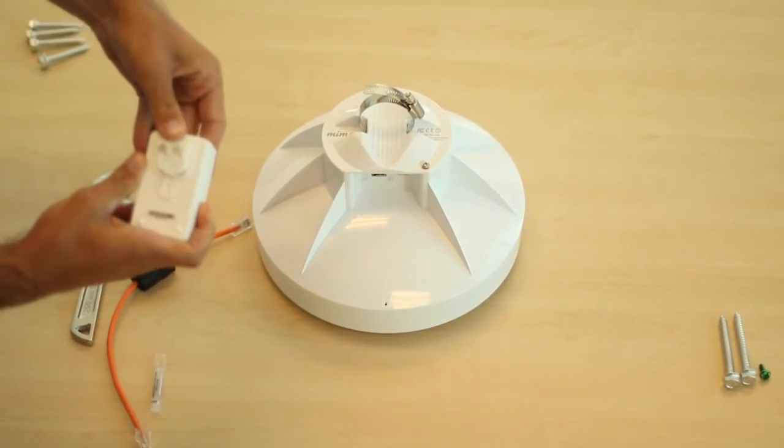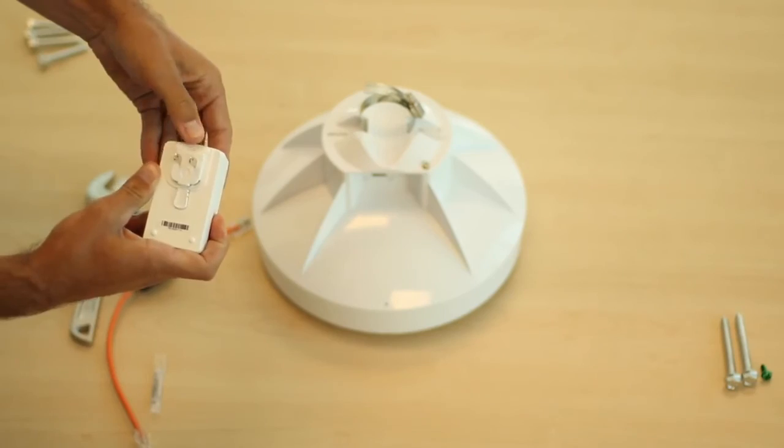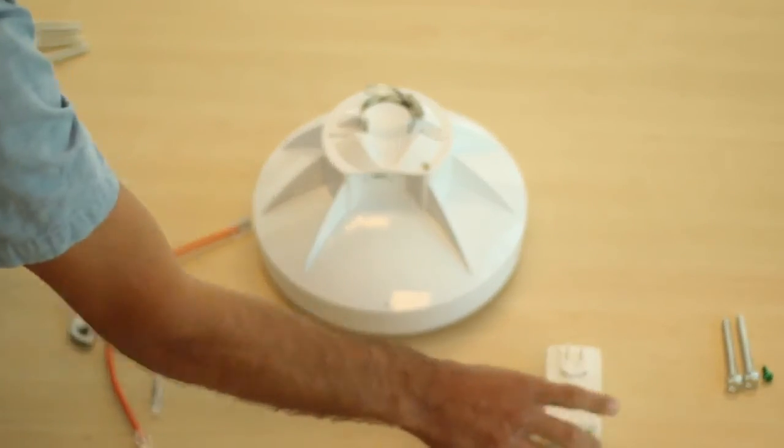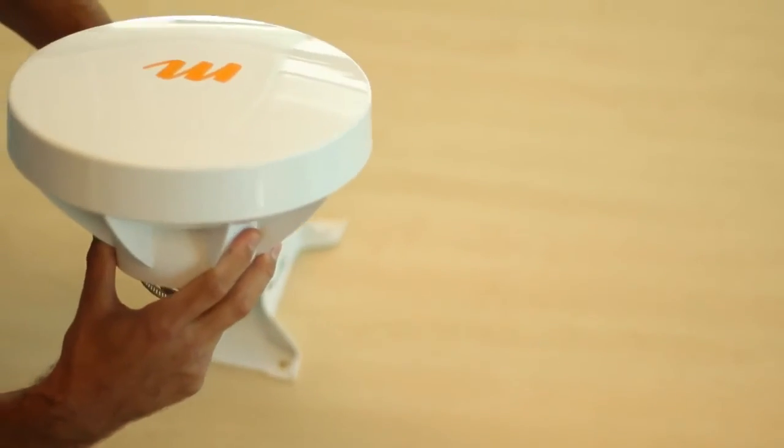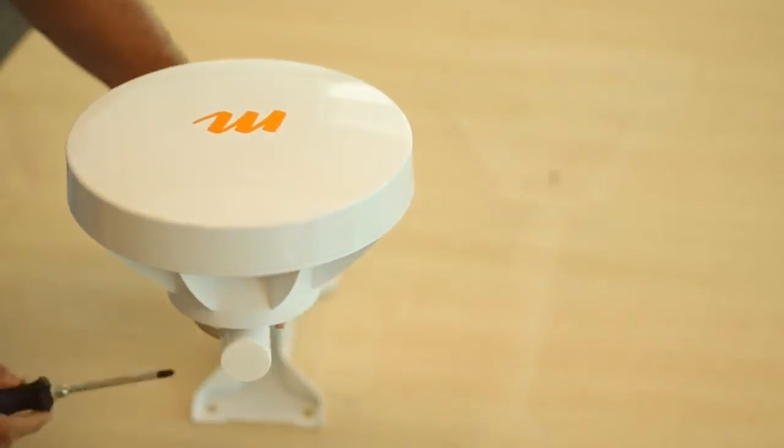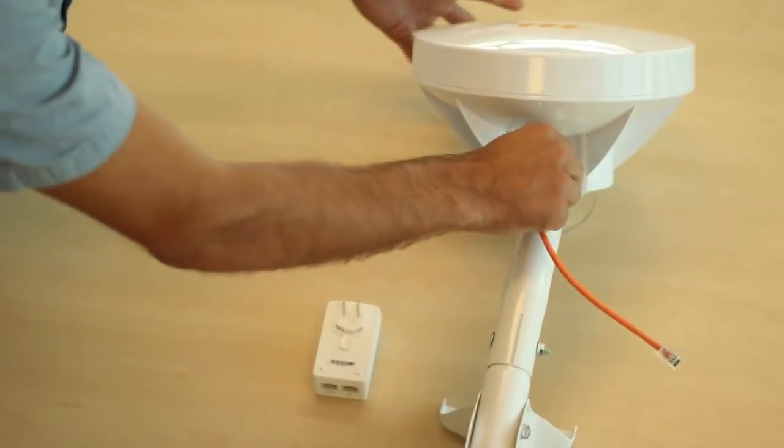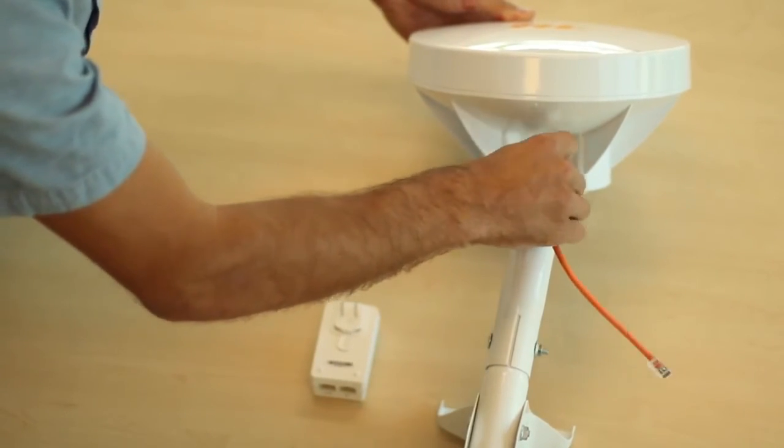Snap the country-specific plug adapter onto the power supply, attach the radio to the mount, and connect the other end of the Ethernet cable into the power supply in the port labeled data plus power.